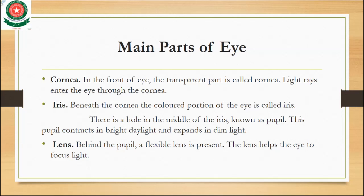Next, beneath the cornea, is the iris — the colored portion of the eye. There is a hole in the middle of the iris which is known as the pupil. The pupil contracts in bright daylight and expands in dim light.